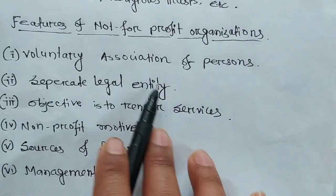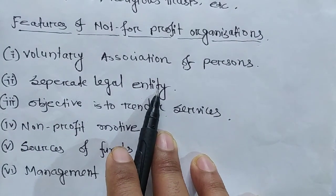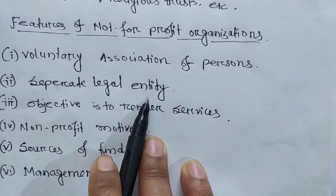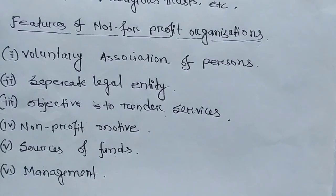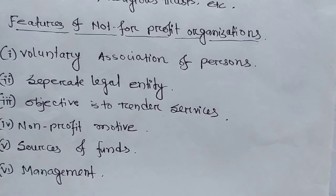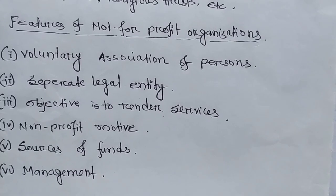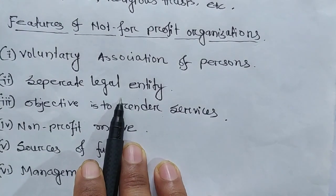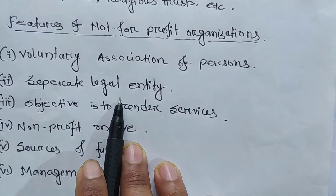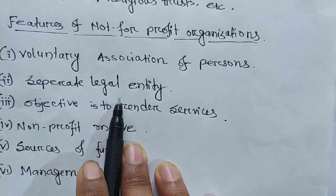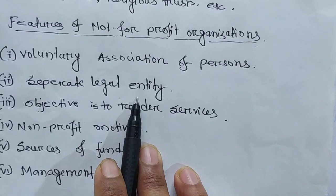The second feature is separate legal entity. In accounting, this means there is a difference between the business organization and its owner — both are two different persons. Similarly, in a Not-for-Profit Seeking Organization, the organization and its members are two separate and distinct entities — they are not the same person.